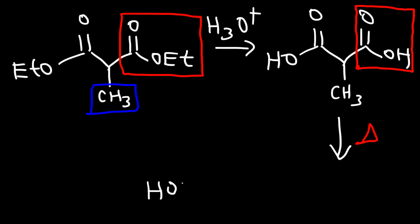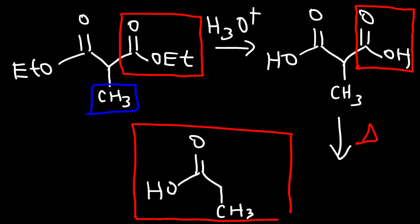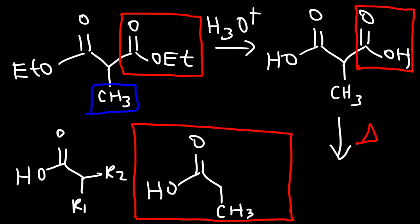So therefore, we're going to get this product. The malonic ester synthesis reaction is very useful for making substituted carboxylic acid molecules. The generic formula shows that on the alpha carbon, you can add one R group or two R groups, because there's another alpha hydrogen that we can take off.